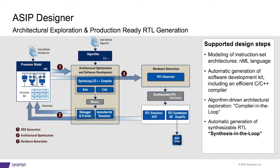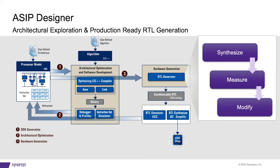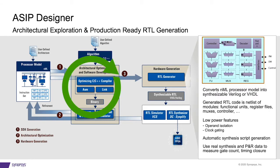Using the same NML model, you can generate fully synthesizable RTL code. All information is contained in the NML model and you have full control on the way the RTL code is structured, which turns out to be very readable. Using your standard synthesis flow, you will get information on area, timing, and power consumption, which might identify the need for some changes to the processor architecture. This RTL-in-the-loop approach marks the second feedback loop, enabling a truly profiling-based architecture design.